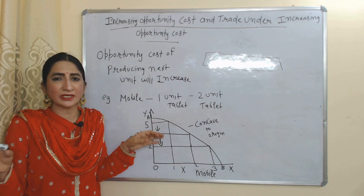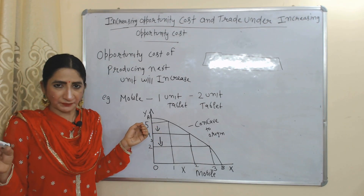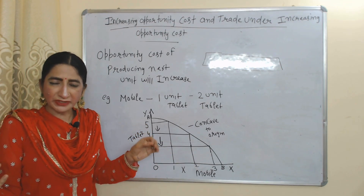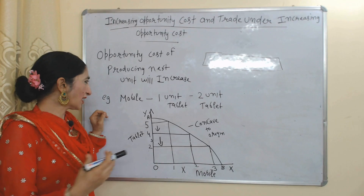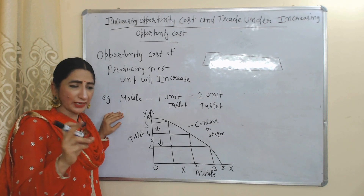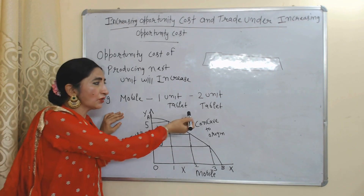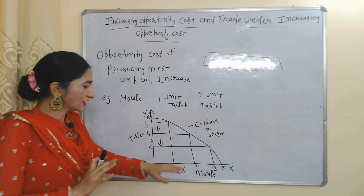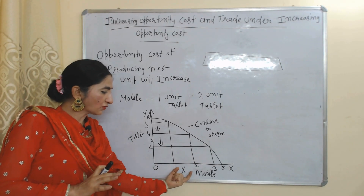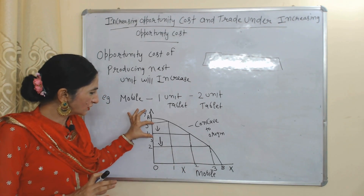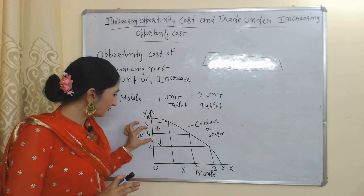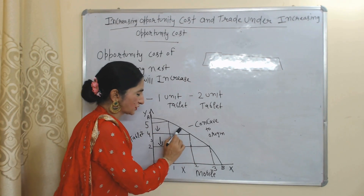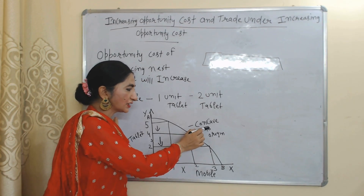Now we will see increasing opportunity cost and international trade under increasing opportunity cost. Increasing opportunity cost means the opportunity cost of producing the next unit will increase. For example, initially you give up only one tablet to produce one mobile, but after that you are giving up two tablets to produce one mobile — the opportunity cost of producing one more unit of mobile is increasing. In the diagram, on the x-axis we have mobile and on the y-axis we have tablet. In case of increasing opportunity cost we have a concave to origin production possibility curve.